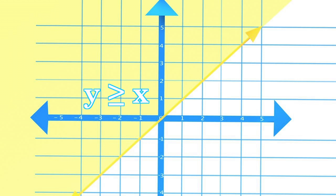You do this by shading the region above the line. This graph represents all the points on y equals x, like negative 2, negative 2, and 2 and 2.